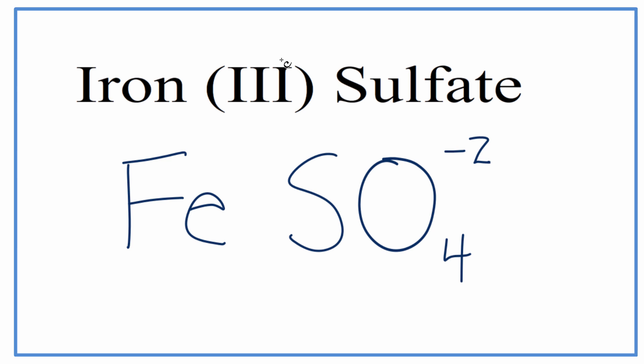For the iron, this Roman numeral 3 in parentheses tells us that the iron has a plus 3 charge. So we have our charges here. We have a metal and some non-metals, so we know it's an ionic compound.